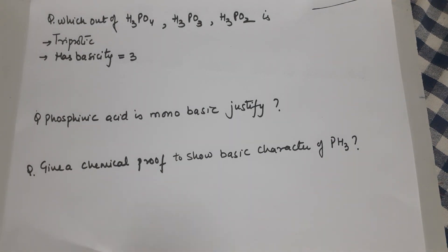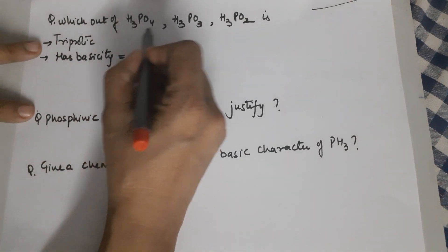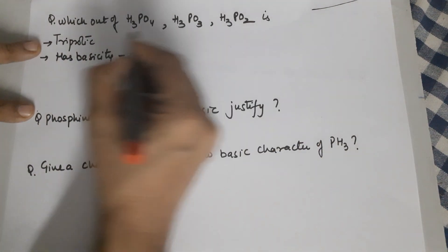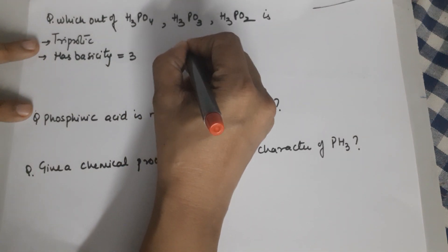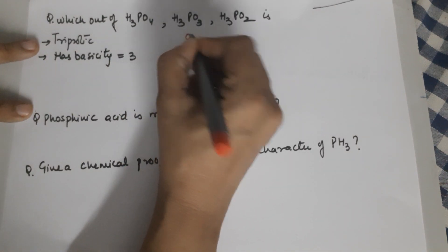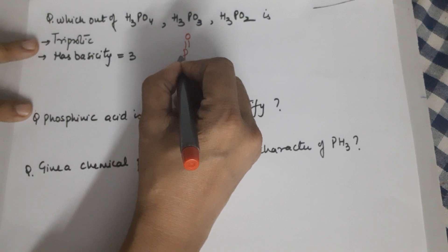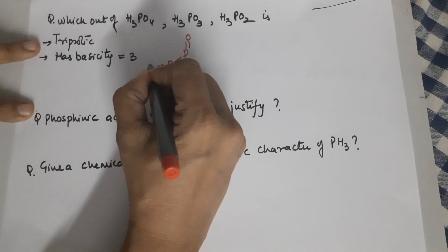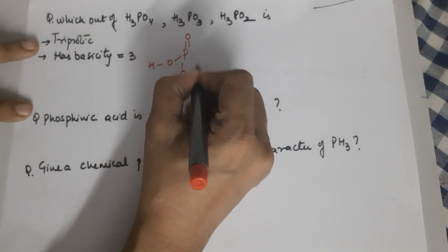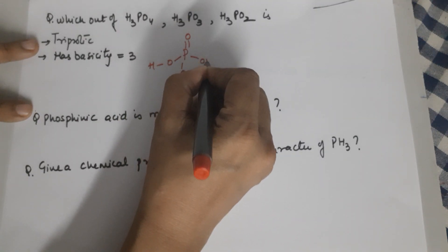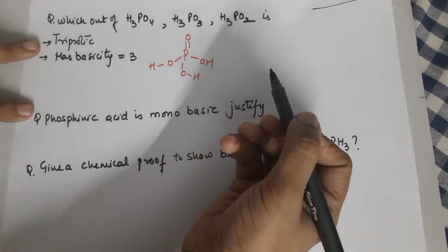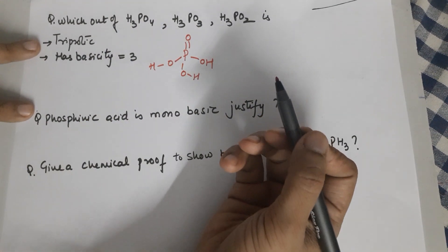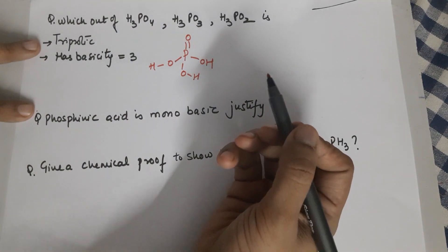Which out of the three oxy acids of phosphorus is triprotic? To understand this you need to know the structures. Oxy acids of phosphorus need to have a P=O, a P-OH, a P-OH, and a P-OH. This is the structure for H₃PO₄, which is your orthophosphoric acid.